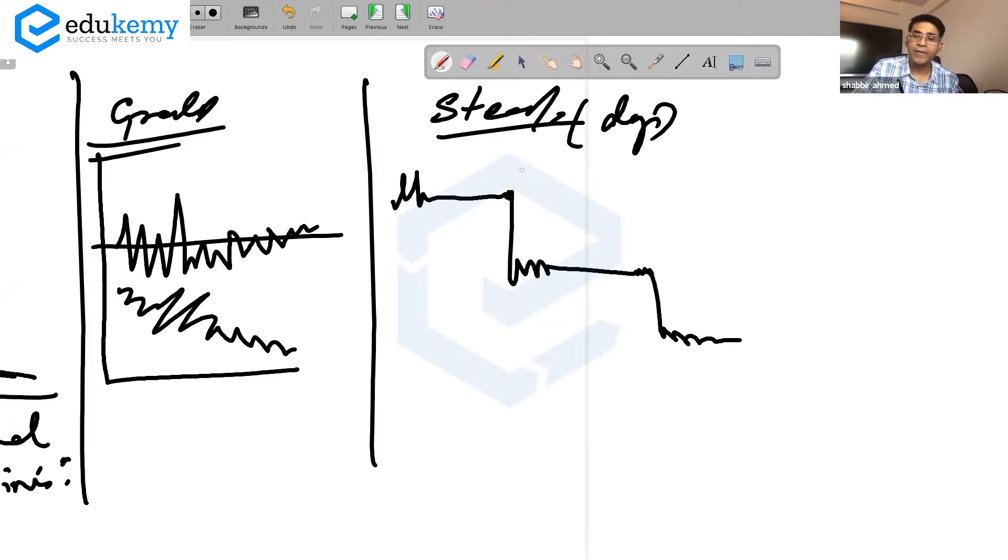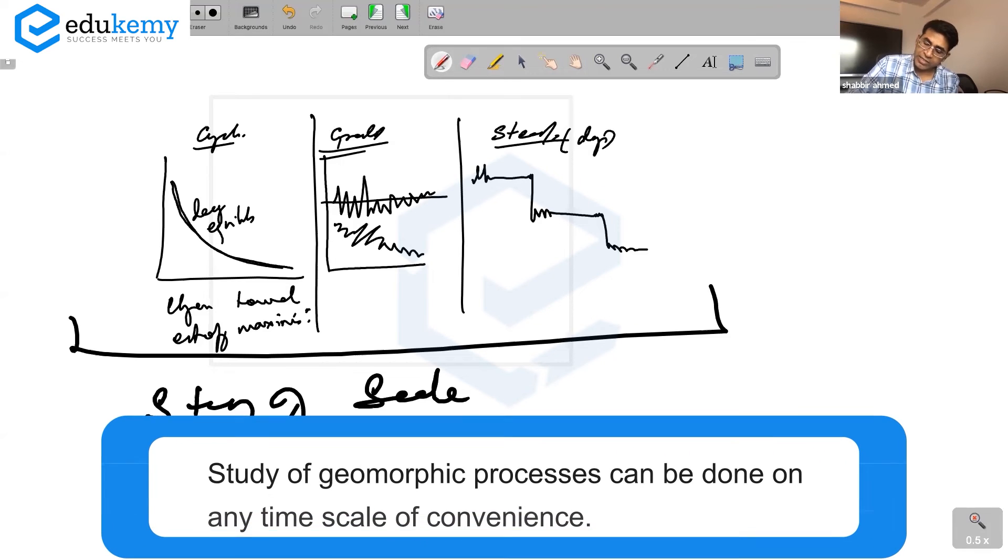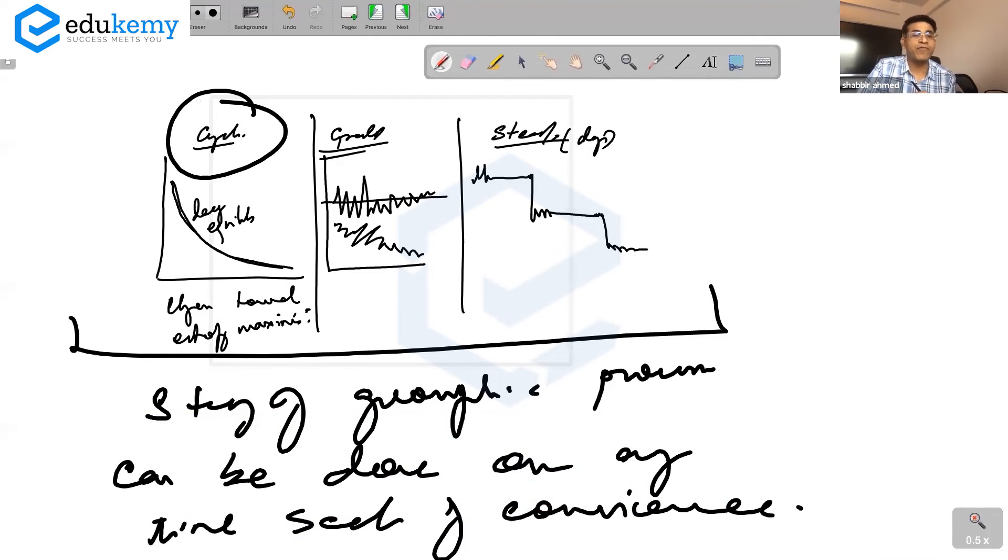In steady state the changes are sudden and episodic. Steady state time is a matter of days. This is all about how we model these three. What we're saying is: study of geomorphic processes can be done on any time scale of convenience.